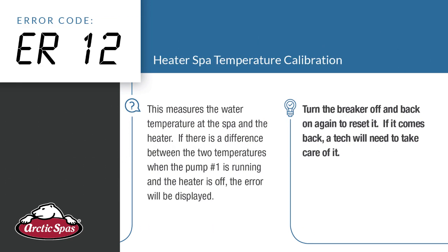ER12 — heater spa temperature calibration. This measures the water temperature at the spa and the heater. If there's a difference between the two temperatures when pump one is running and the heater is off, the error will be displayed. Turn the breaker off and back on again to reset it. If it comes back, a tech will need to come check it out.